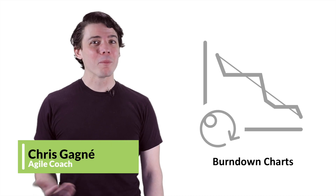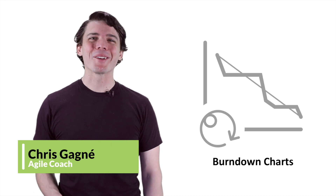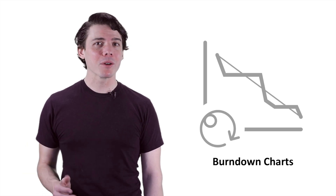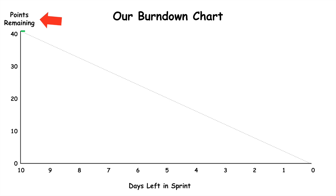A burndown or burn-up chart is an information radiator designed to show time and work remaining for a sprint or release. The most common use of a burndown chart is to show the number of story points not yet accepted by the product owner against the days remaining in a sprint. These sprint burndown charts often include an additional line illustrating the ideal burn rate to keep pace.